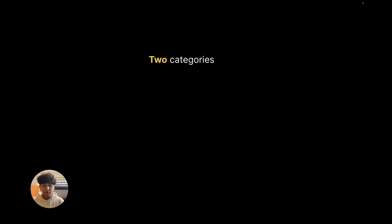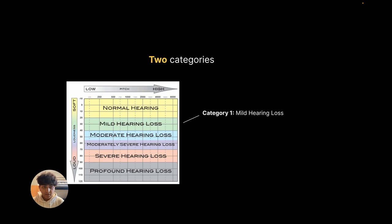First off, let's discuss the problem. To do this, I'm going to introduce two categories: one for people with mild hearing loss, and the other for people with moderate to profound hearing loss.